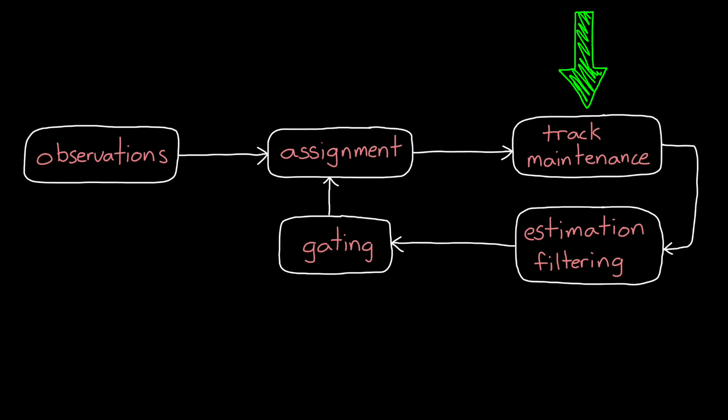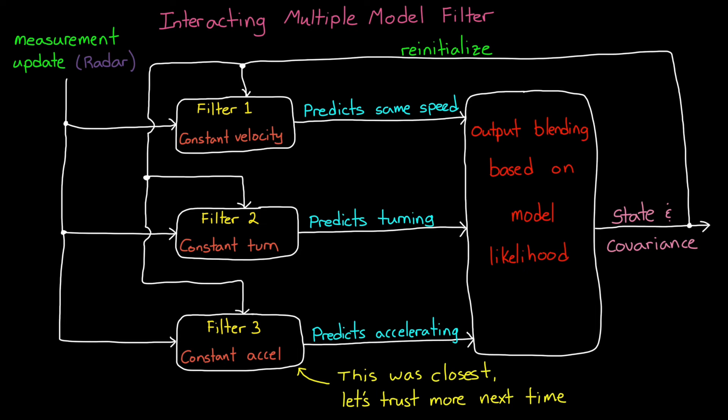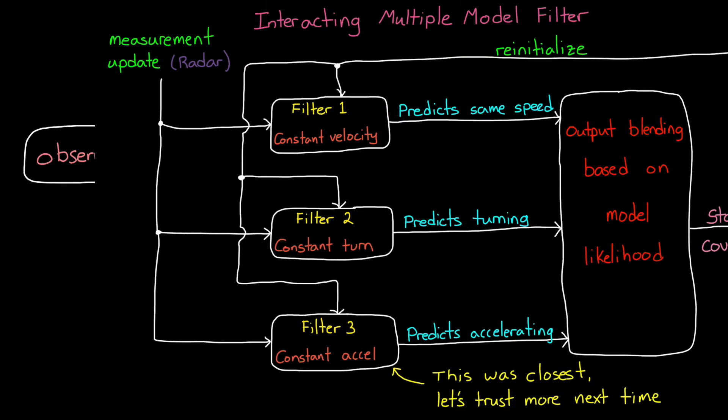So, with the tracks created and removed, and with the observations assigned, we can run a set of estimation filters. And this part is identical to single object tracking, where we had choices like the interacting multiple model filter or the single model common filter. The predicted state of each tracked object that is assigned an observation, and that's both tentative and confirmed objects, they get updated with their respective observation, and then the whole process starts anew.